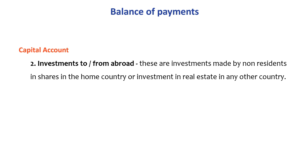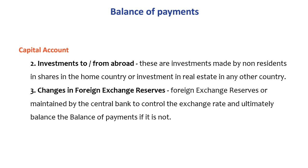The second component is investments to or from abroad — these are investments made by non-residents in shares in the home country, or investment in real estate in any other country. The third component is changes in foreign exchange reserves. Foreign exchange reserves are maintained by the central bank to control the exchange rate and maintain the balance of payments.